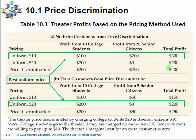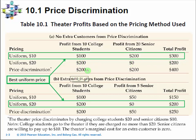The total profit is $400. Because you can now price discriminate, you charge college students higher prices and extract more consumer surplus from them, giving you higher profit. This is basically charging the high-willingness-to-pay group a higher price. When you can price discriminate, you bring in more revenue, and the money comes from transferring consumer surplus to the producer.